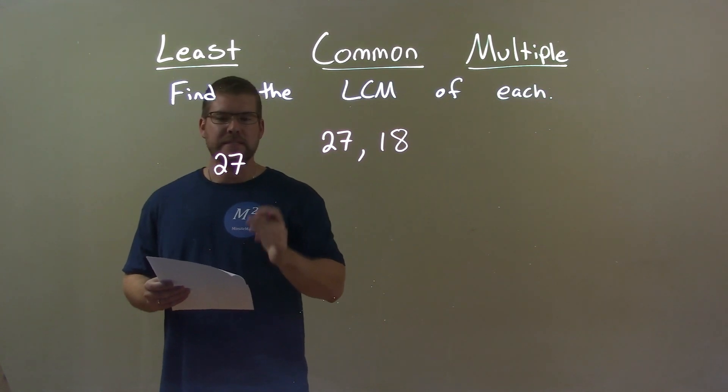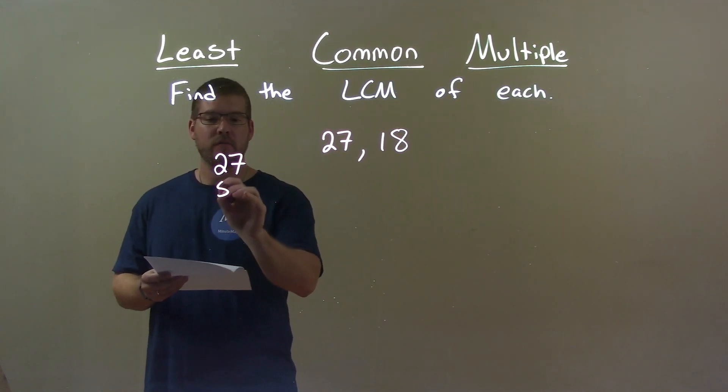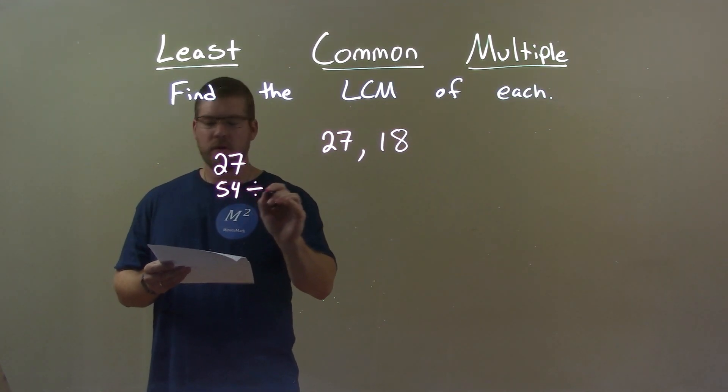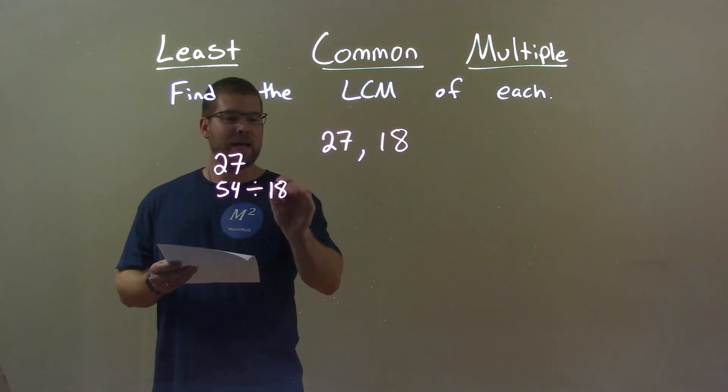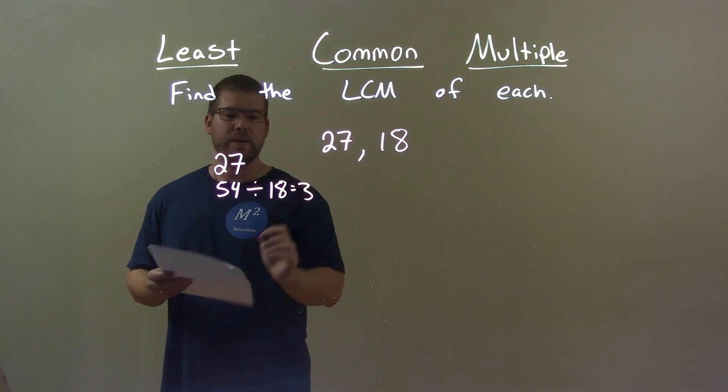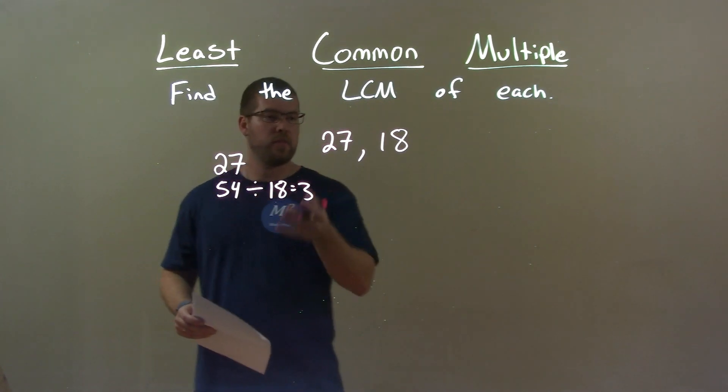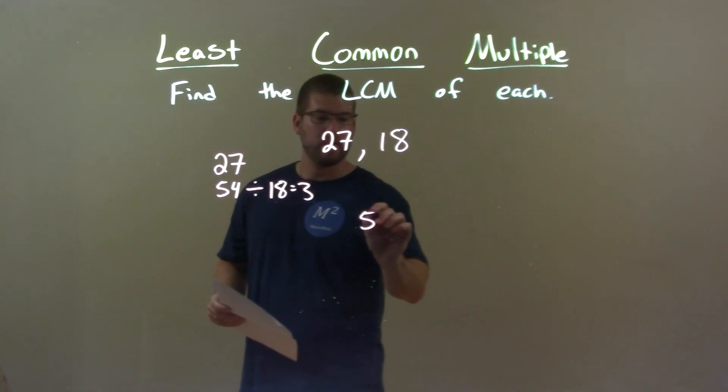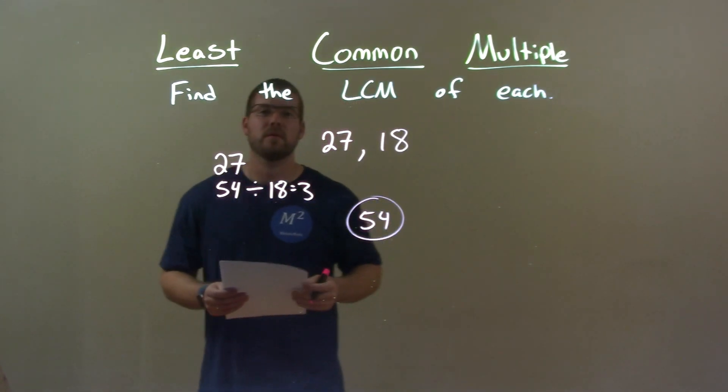Well, 18 does not go into 27, but the next multiple is 54. 54 can be divided by 18, and that becomes 3. So 54, you can divide by 18 and get 3, and so 54 here now is my least common multiple.